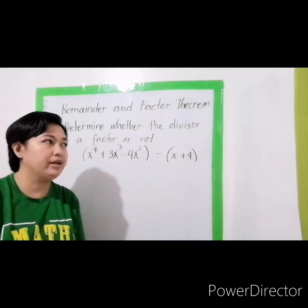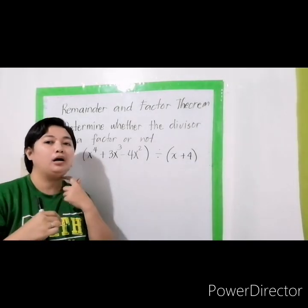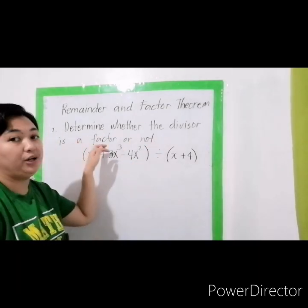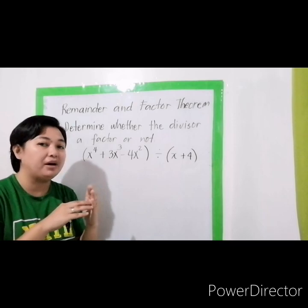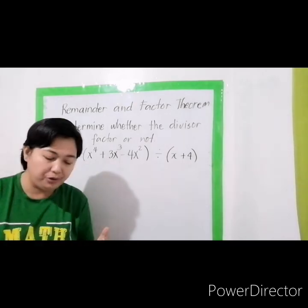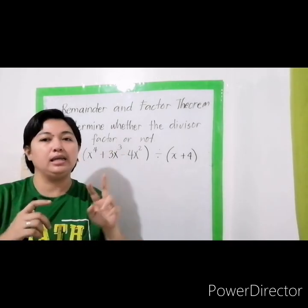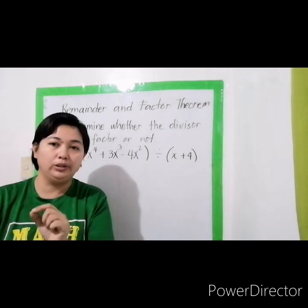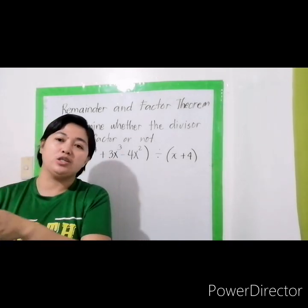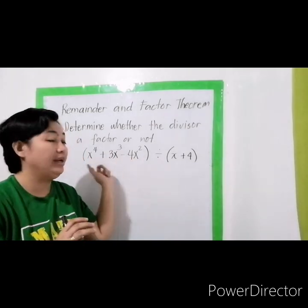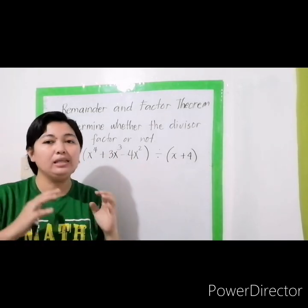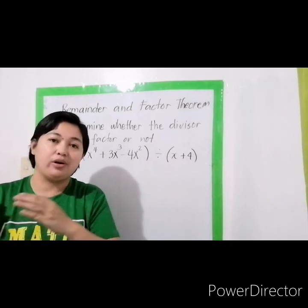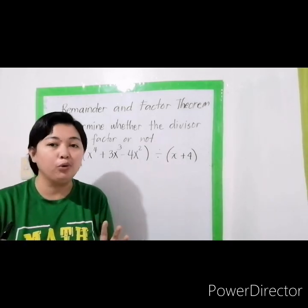Now the instruction says to determine whether the divisor is a factor or not — this is the factor theorem. In the factor theorem, remainder and factor theorems are interconnected. If the remainder is 0, we can conclude that the divisor is a factor of the dividend. If the remainder is not 0, then the divisor is not a factor.